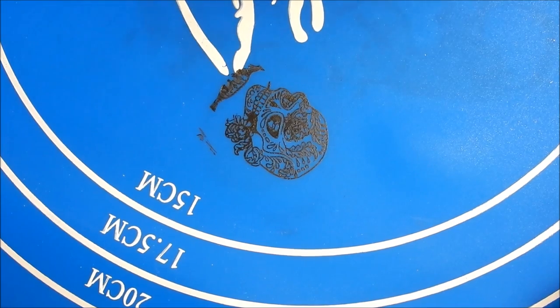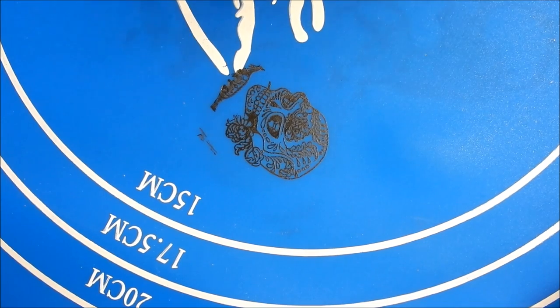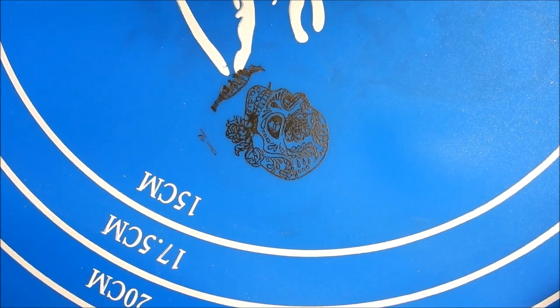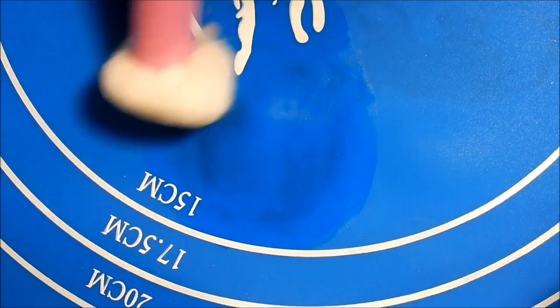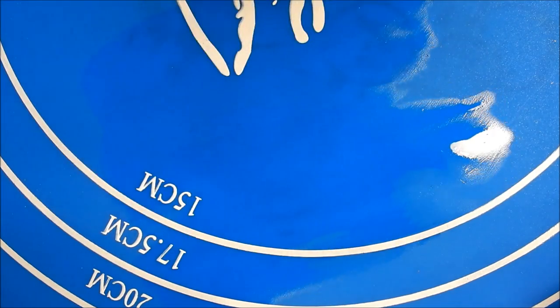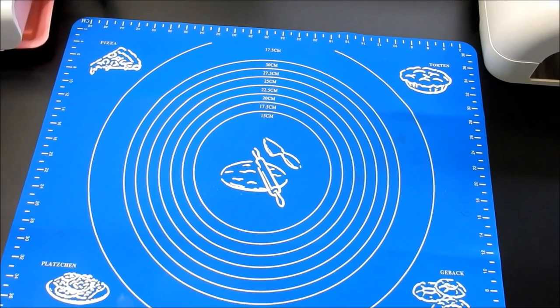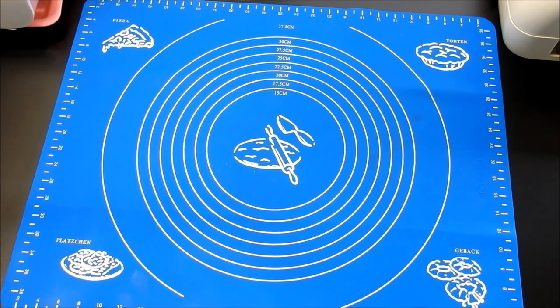I just stamped an image right on the mat and I'm just going to use some acetone and take that off and show you. Just look at that - no damage to the mat.